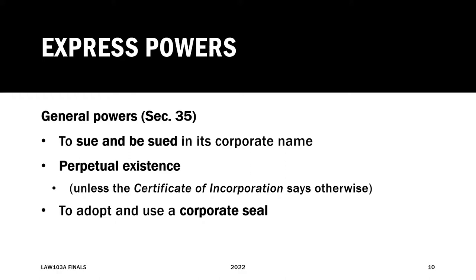While we're talking about powers, let us dive into the three categories. Express powers are explicitly provided under the law or any other issuance. We look first at Section 35 of the Revised Corporation Code — the general powers. A corporation has the power to sue and be sued, not in the name of any of its incorporators, not in the name of its Board of Directors, not in the name of its president, but in its own name — because a corporation has its own separate and distinct personality.